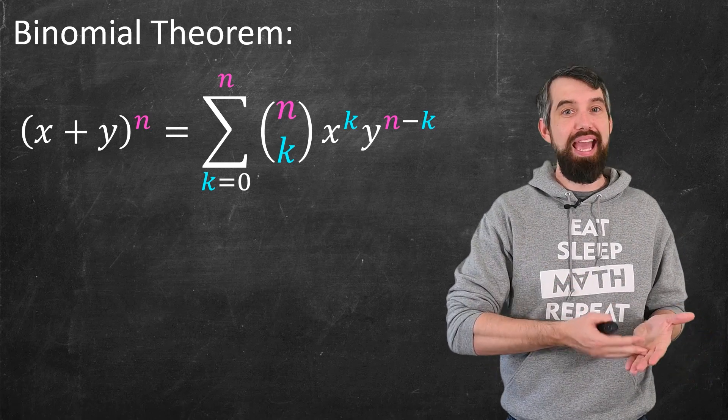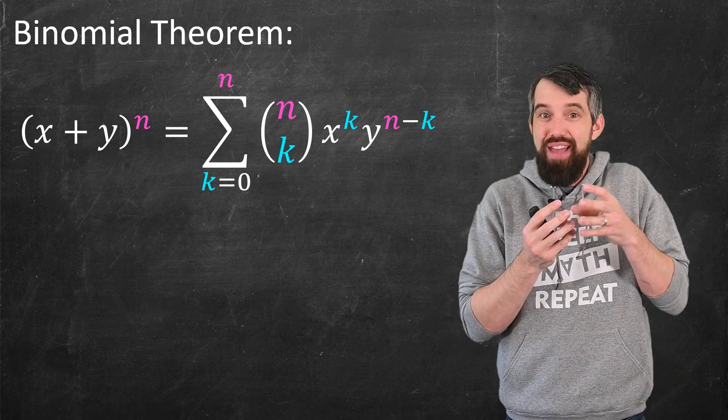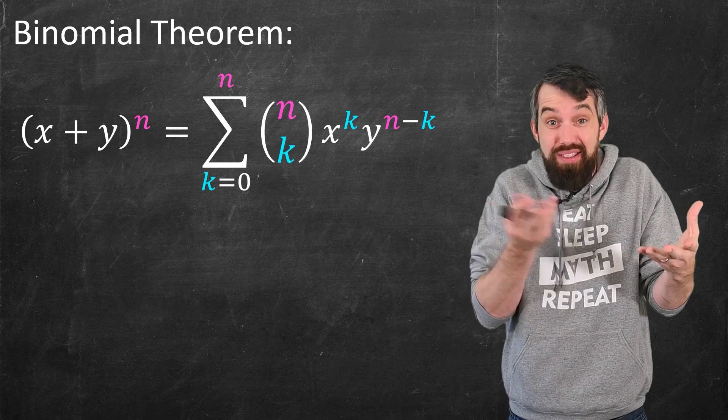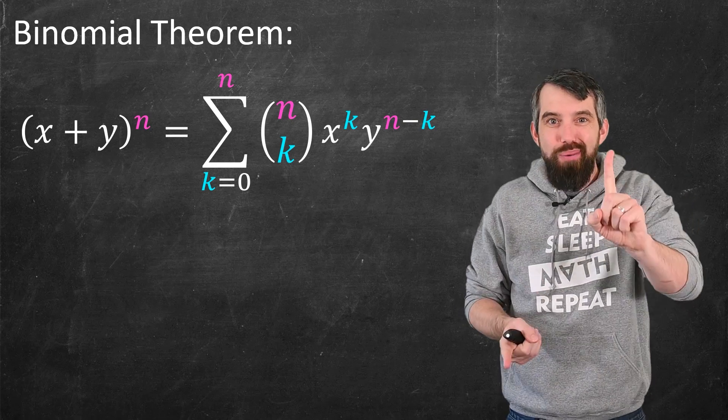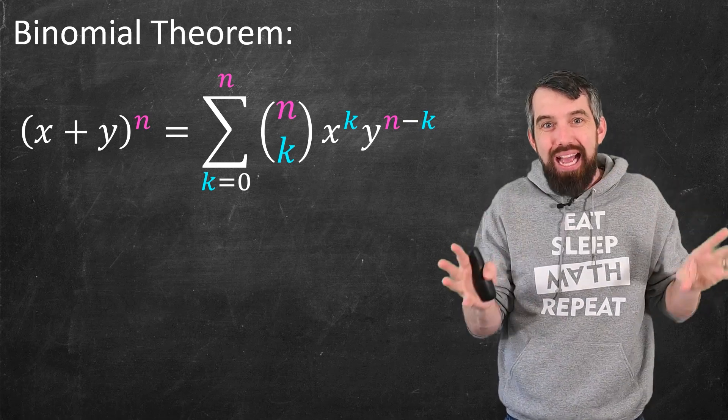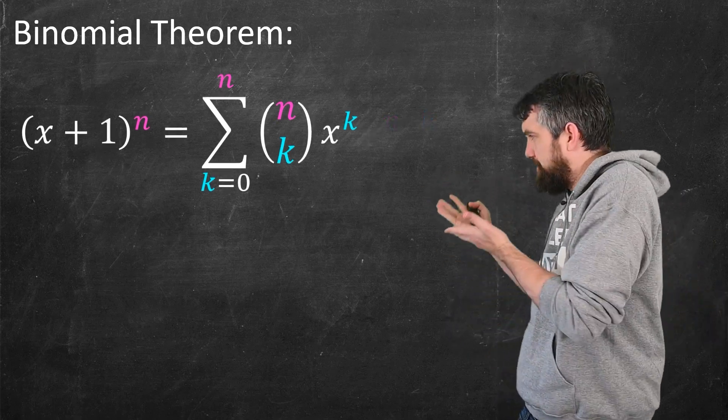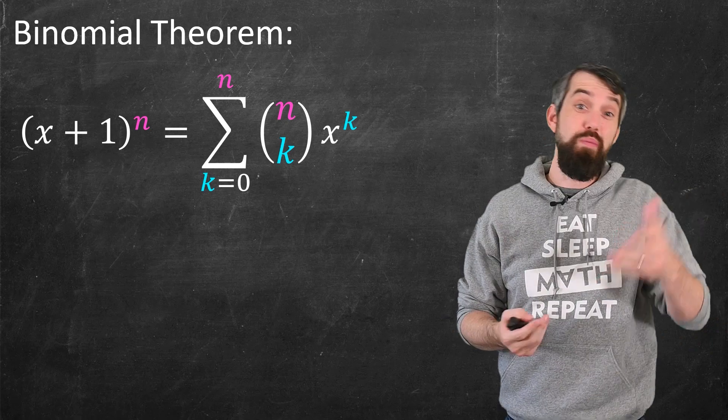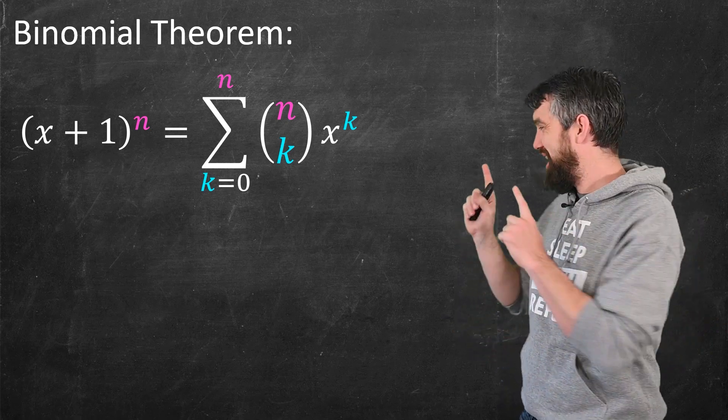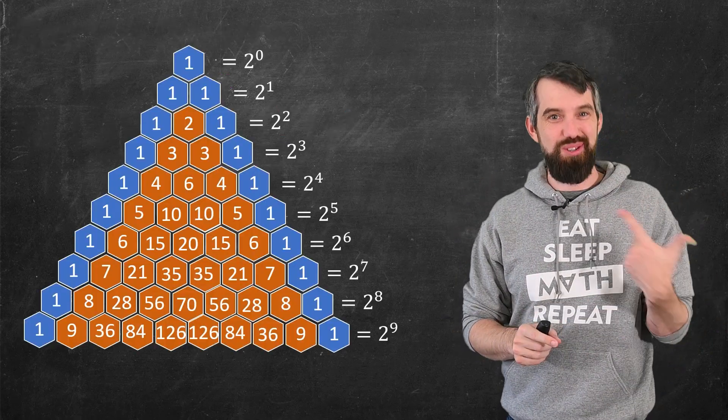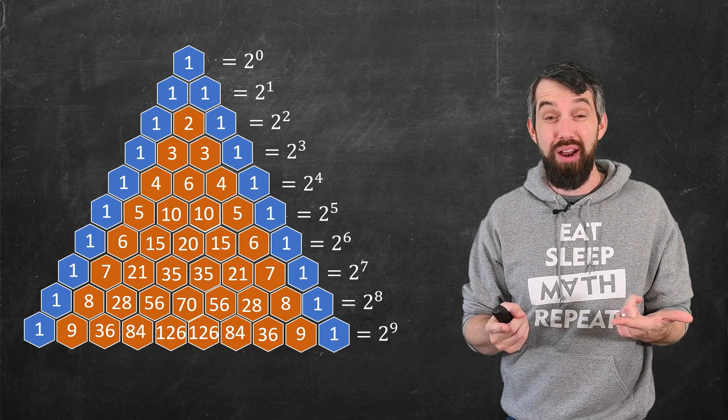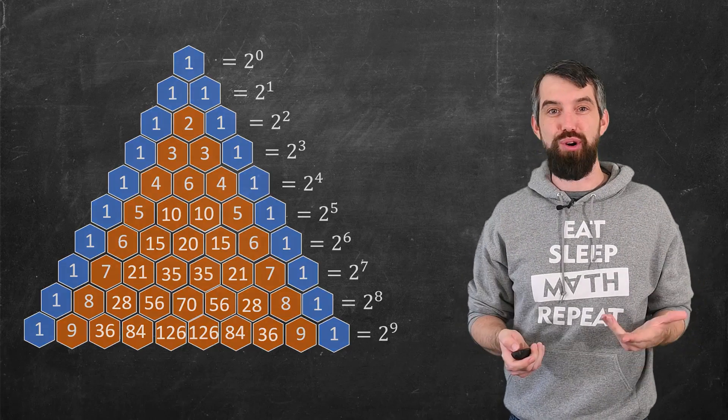And this should hopefully make some sense. For example, if we plug in k equal to n here, so that's saying you just have x to the n and y to the 0, which is just 1. There's only one way to make that happen, that's when you choose x in every one of those factors. Again, I can just take y equal to 1 and get this format for binomial theorem. You might see it both ways.